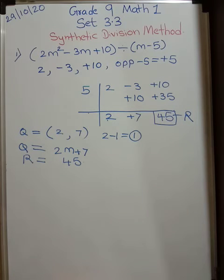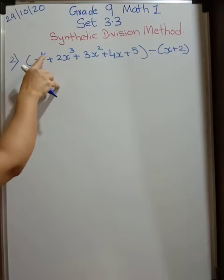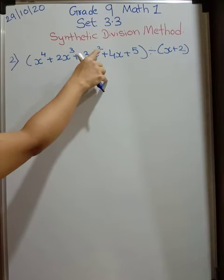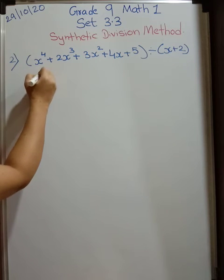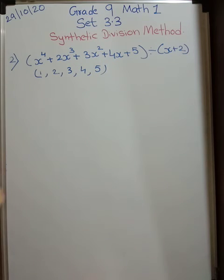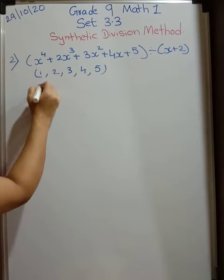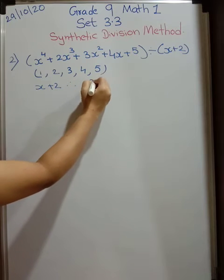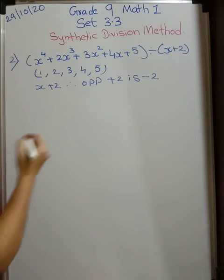Let us go to the next problem. We will do few more problems then it will be clear to you. Now look at the second problem. Now here we have our variable x. Now check first index form. Check all the powers: 4, 3, 2, 1 and constant. So none of the x term is missing. All are there. So coefficient form will be what? 1, 2, 3, 4 and 5. This is your coefficient form of the dividend. This is coefficient form of dividend. Now what is divisor? x plus 2. Therefore opposite of plus 2 is minus 2. Because that we are going to take.